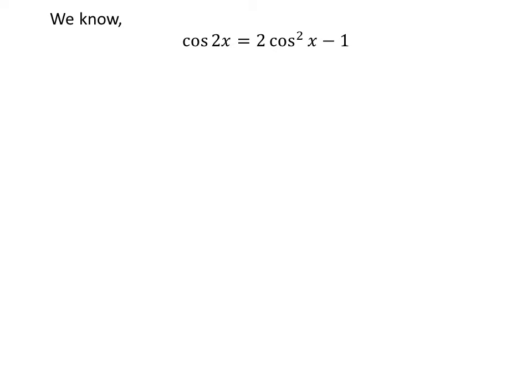We know the famous trigonometry identity: cos(2x) = 2cos²(x) - 1.